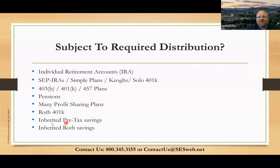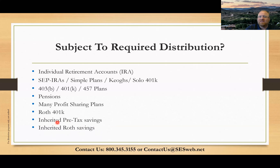Anytime you inherit money from a Roth account or a pre-tax IRA — meaning all of these other account types — if you inherit from a non-spouse (a father, mother, cousin, uncle, sister, brother, whoever it is), you are now subject to a 10-year distribution rule. There are no controls on what you take and when — you can wait all 10 years and take it all out at once, which you'd typically want to do with Roth. For an inherited IRA, for tax reasons, you want to avoid taking it all out at once.